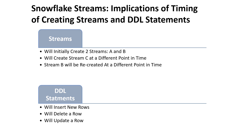In this video, we are going to create three different streams and run some DDL statements. We'll initially create two streams, A and B, then create another stream C later. After that, we'll replace stream B to see what the implications are. For the DDL statements, we'll insert some new rows, we'll delete a row, and then finally we'll update a row in the table.